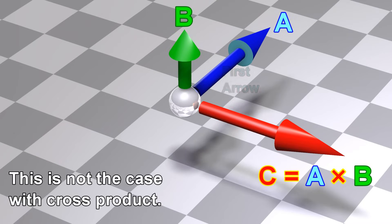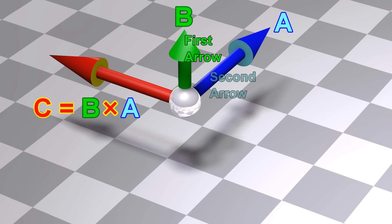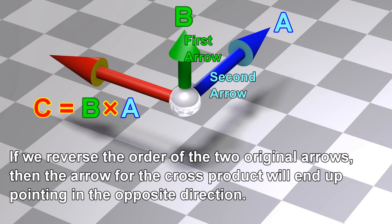This is not the case with cross product. If we reverse the order of the two original arrows, then the arrow for the cross product will end up pointing in the opposite direction.